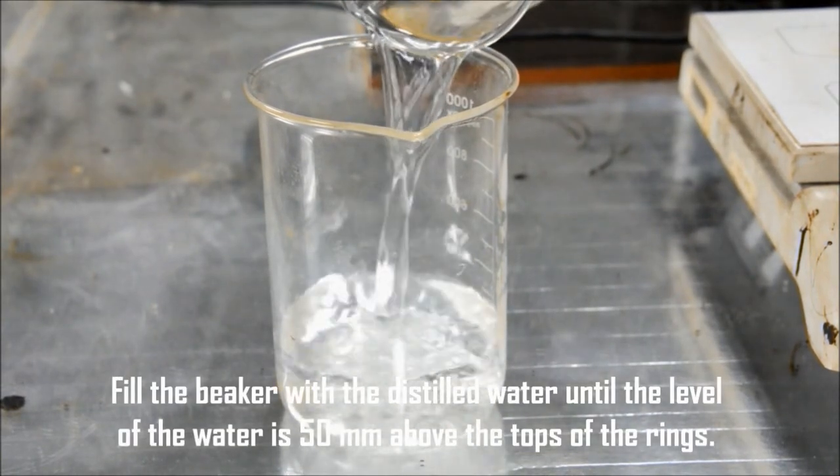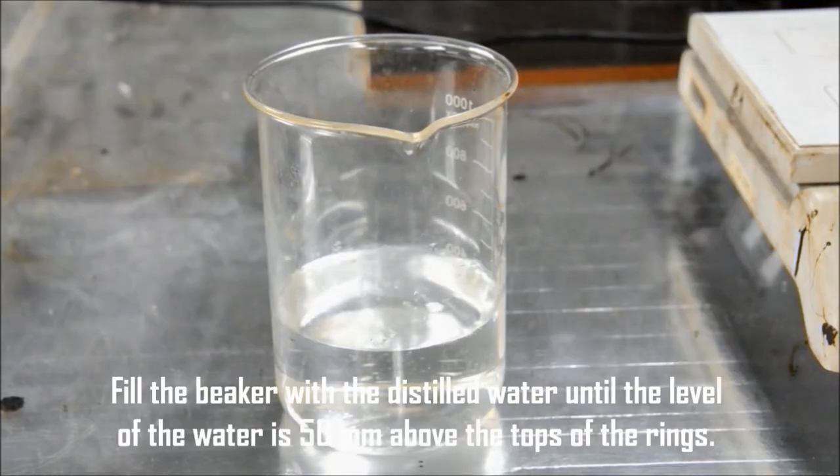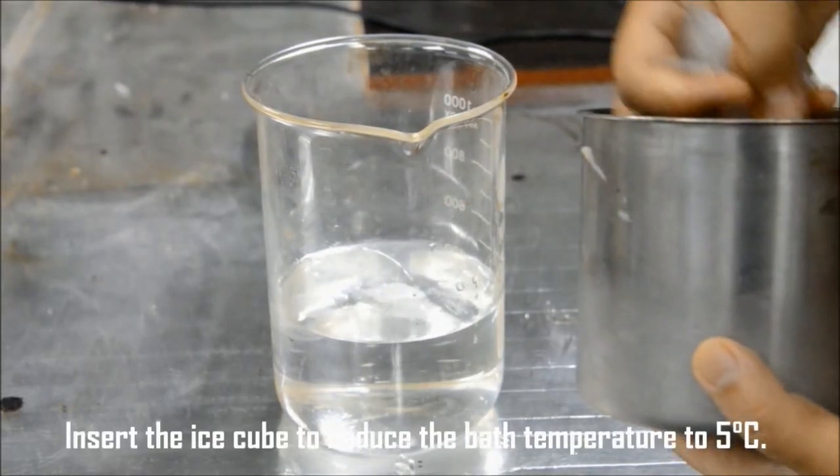Fill the beaker with distilled water until the level of the water is 50mm above the tops of the rings. Insert the ice cube to reduce the bath temperature to 5 degrees Celsius.